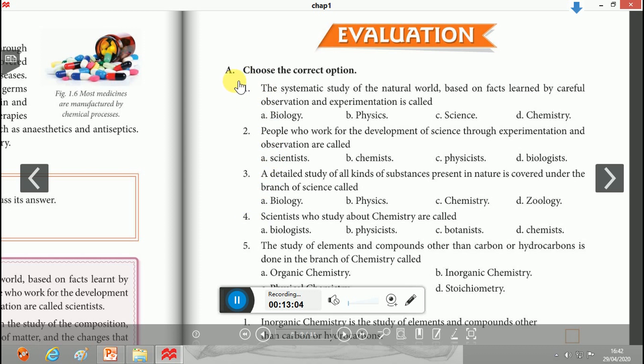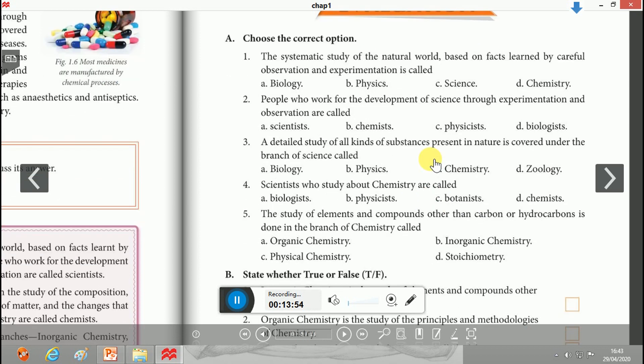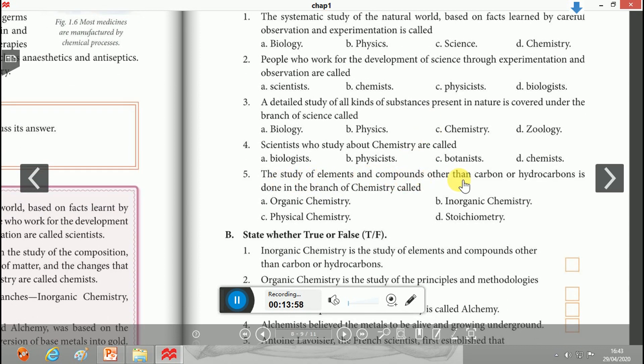Choose the correct option. Question 1: The systematic study of the natural world based on facts learned by careful observations and experiments is called - option C, Science. People who work for the development of science through experimentations and observations are called - option A, Scientists. A detailed study of all kinds of substances present in nature is covered under the branch of science called Chemistry, option D. The study of elements and compounds other than carbon and hydrocarbons is done in the branch of chemistry called Inorganic Chemistry, option B.